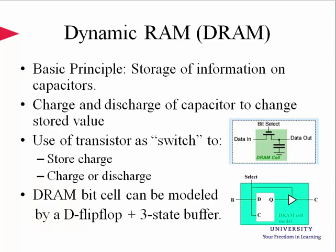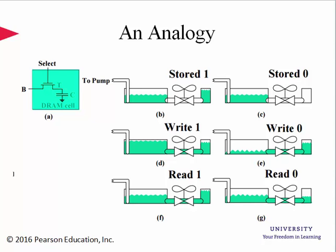The second class of RAMs is called dynamic RAM. The principle behind it is the storage of information on capacitors — charging and discharging the capacitor to change the stored value. The transistor is used as a switch and allows us to store a 1 by charging the capacitor or a 0 by discharging it. We can model the DRAM bit cell through a D flip-flop and a three-state buffer. When writing a 1, the bus connecting the transistor is charged, then the transistor is switched on to allow the charge to move into the capacitor. Next, the transistor is switched off to trap the charge on the capacitor before it starts leaking.